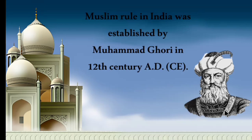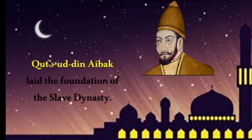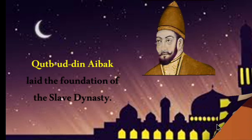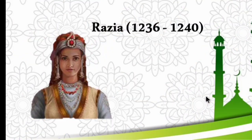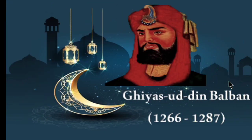When Mohammed Gori returned to Afghanistan, he kept his notable slave Khudupuddin Aibak as ruler of Delhi. Aibak laid the foundation of the Slave Dynasty and was succeeded by his son-in-law Ilthamush, whose time period is 1210–1236. Ilthamush was succeeded by his daughter Razia (1236–1240). After Razia, a commander in her army named Giyas Uddin Balban succeeded the throne, ruling from 1266 to 1287.